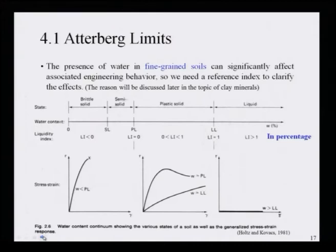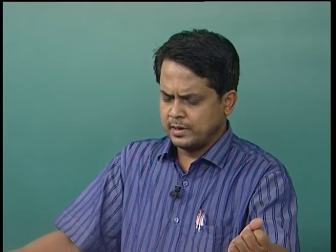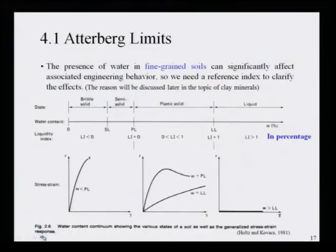There are four states of soil based on the presence of water in fine-grained soil: liquid, plastic, semi-solid, and solid. The liquid state is when the liquidity index is greater than 1 — at this stage the soil behaves like a fluid and flows. When the liquidity index is between 0 and 1, the fine-grained soil is in the plastic state.